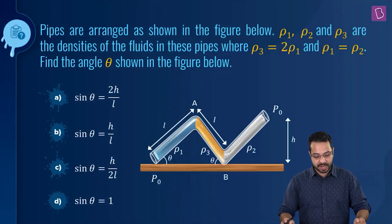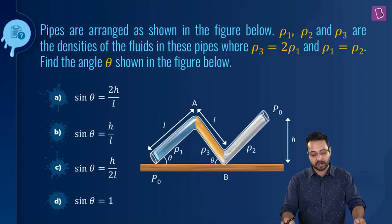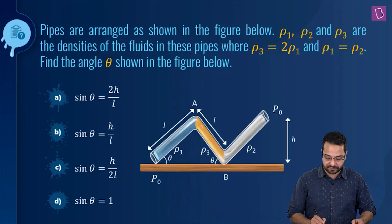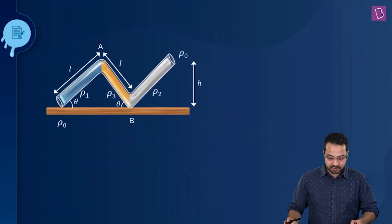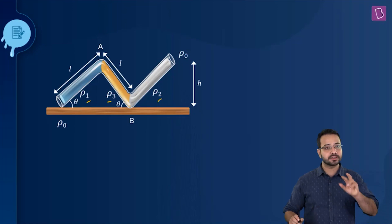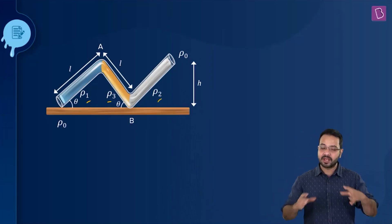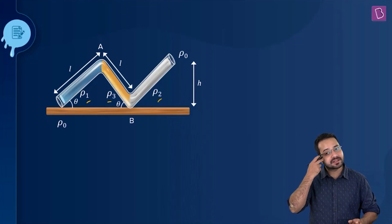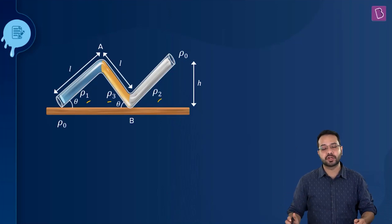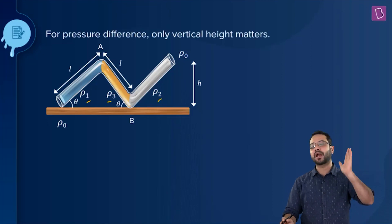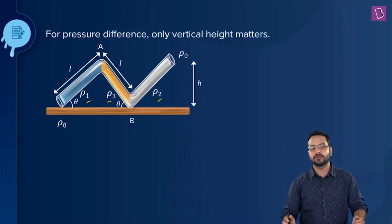Pipes are arranged as shown. ρ1, ρ2, and ρ3 are the densities of three fluids where ρ3 = 2ρ1 and ρ1 = ρ2. Find angle theta. The system is in equilibrium. The key principle is that pressure variation depends only on vertical height — the actual length of the column does not matter.